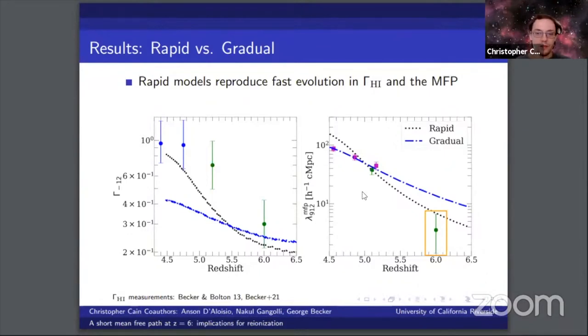Notice that while the gradual model can reproduce the low redshift evolution of the mean free path very well, it misses the rapid evolution from z equals 6 towards lower redshifts, and also undershoots the low redshift measurements of the photoionization rate by a factor of a few. The rapid model agrees reasonably well with photoionization rate measurements and captures the quick evolution in the mean free path.